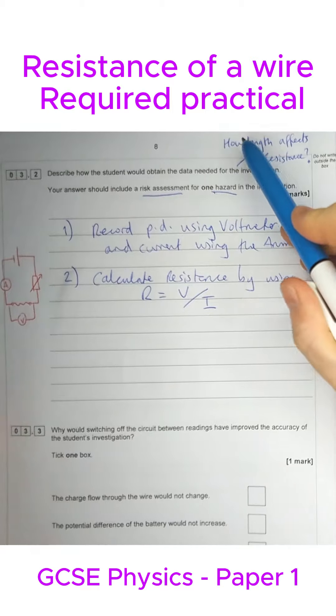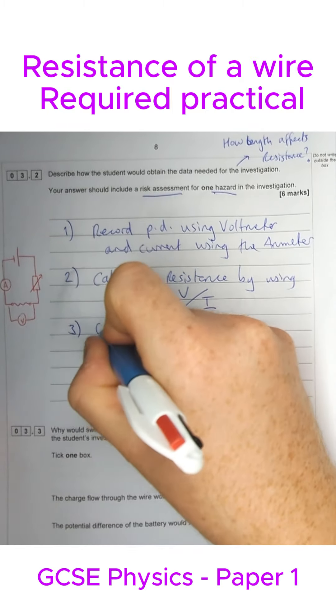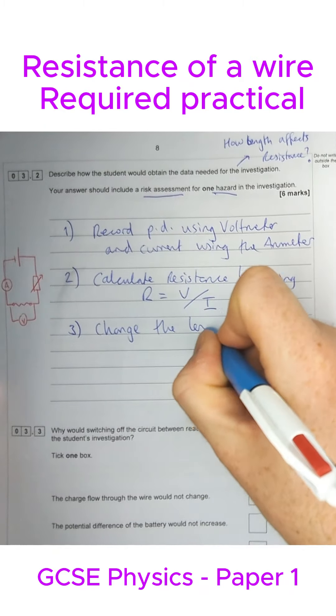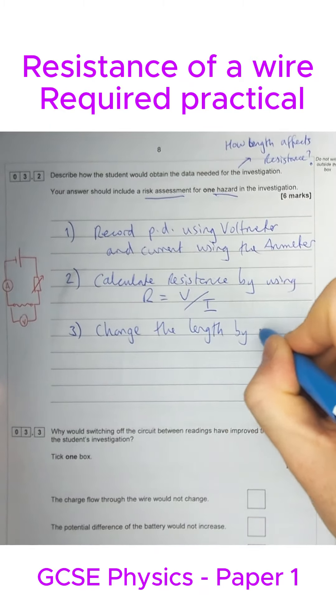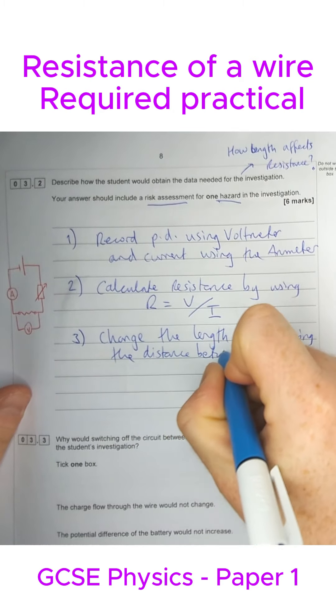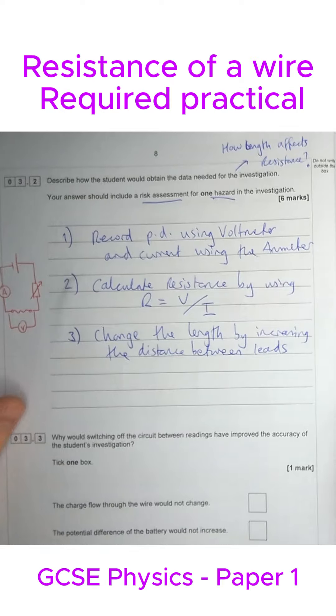The next bit of the question, we're going to go back to what the investigation is about. How does length affect resistance? So we have to change the length to be able to investigate that. We're going to change the length by increasing the distance between, now it could be crocodile clips or leads. I'm just going to say leads here.